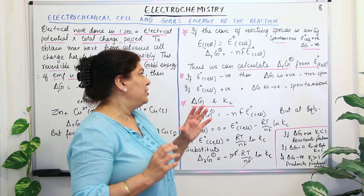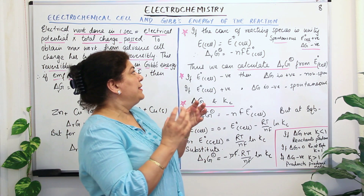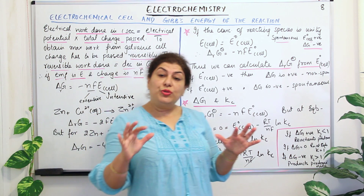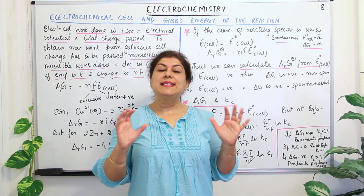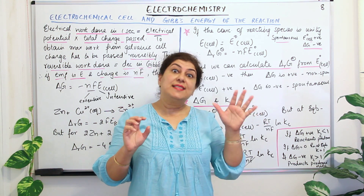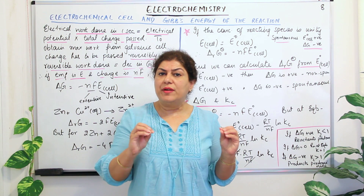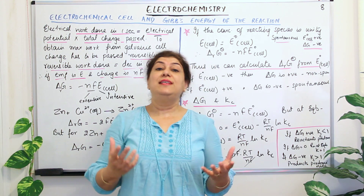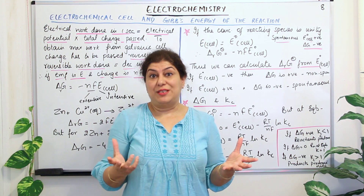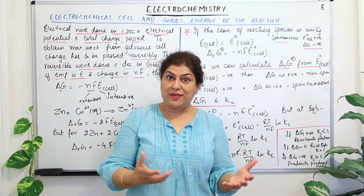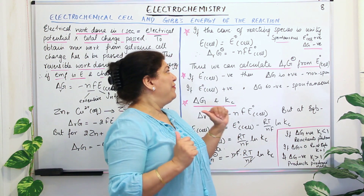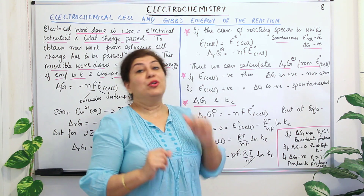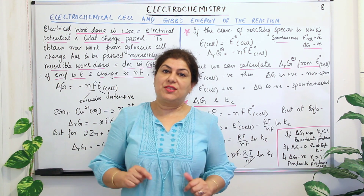You need to pay attention to whether these values are positive or negative. By convention, E cell = E right minus E left, where right is the cathode and left is the anode. This convention was chosen so that for a spontaneous reaction, E cell is always positive. Therefore, E° cell for a non-spontaneous reaction would be negative.